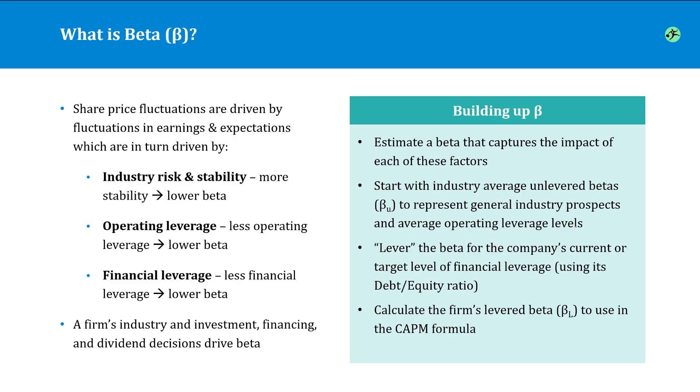So first, we're going to start with the industry average beta that will adjust to exclude some of the impact of the individual company financing decisions. So the benefit of this is that this industry average beta is going to include both the industry and the marketplace volatility within it, and it's also going to capture the industry's average operating leverage impact on beta.